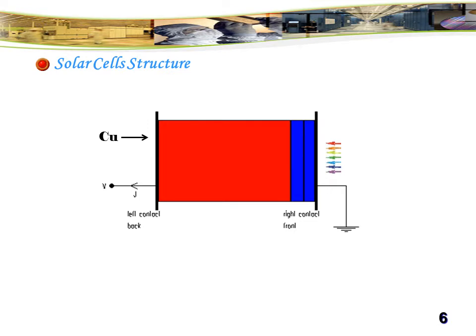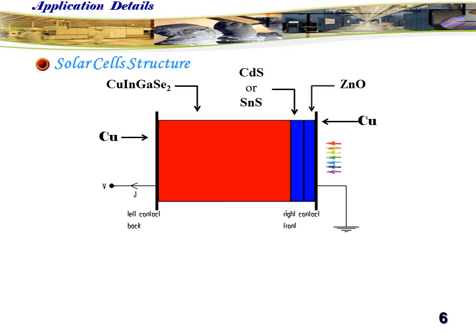The structure of the solar cells simulated by SCAPS consists of back contact from molybdenum, absorber layer from copper indium gallium selenite, buffer layer from cadmium sulfide or tin sulfide, optical windows from zinc oxide, and a front contact from aluminum.